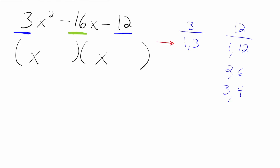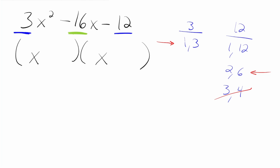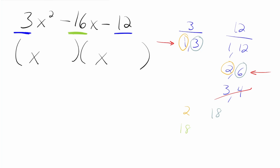This time we're going to keep using that 1 and 3 pair, but since the 3 and 4 pair doesn't work we're going to move on to the 2 and 6 pair. We multiply the two left numbers: 1 times 2 gets us 2. And we multiply the right numbers: 3 and 6 getting us 18. Let's add and subtract to see which one gets us that middle number. 18 plus 2 gets us 20 — not 16. Then 18 minus 2 gets us 16. We found it!